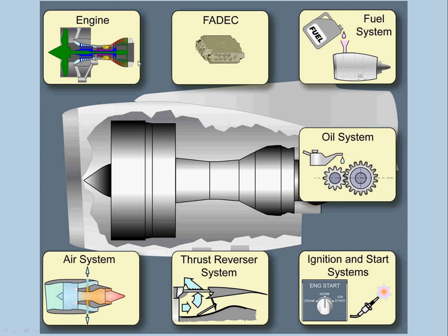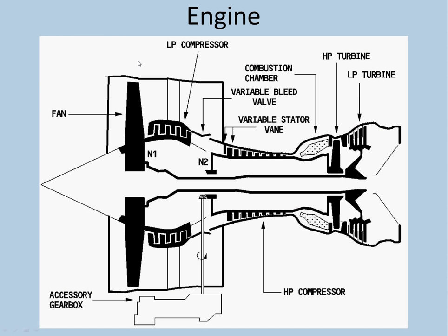Let's talk about the engine first. This is what an engine looks like if it is cut across. You can see the fan here, and there are compressors — LP compressor, HP compressor — combustion chamber, HP turbine, LP turbine, VBV, VSV, and the accessory box.